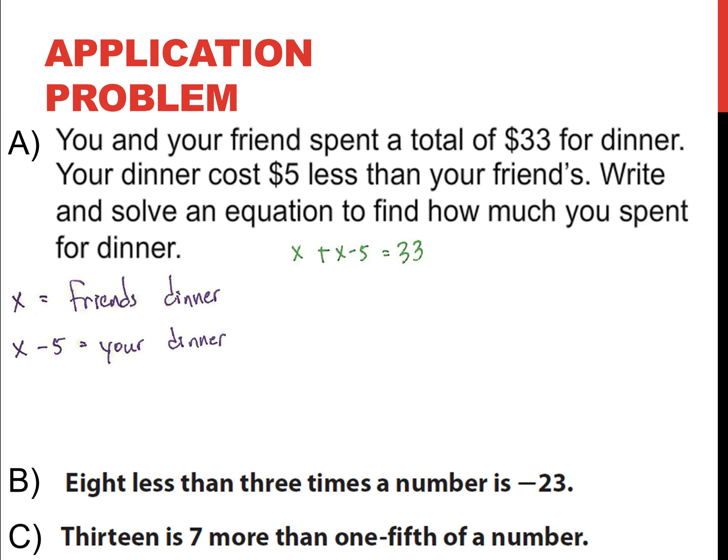So, we can write an equation for that. If we add the two dinners together, x for your friend's dinner, and x - 5 for your dinner, hence, x + x - 5 = $33, the total for both dinners, we can start solving the two-step, or multiple-step equation, in this case, three steps, to find out how much your dinner costs.